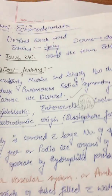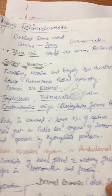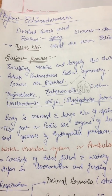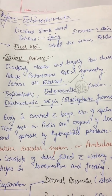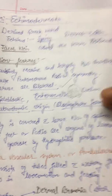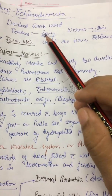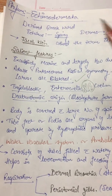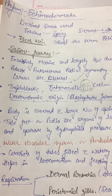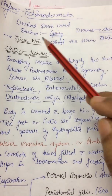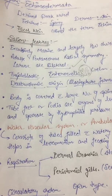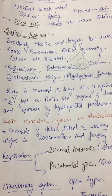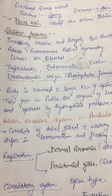This is a small topic and it will be covered quickly. The term Echinodermata is derived from a Greek word: 'Echinos' which means spiny and 'derma' means skin. The term Echinodermata was coined by Jacob Klein.